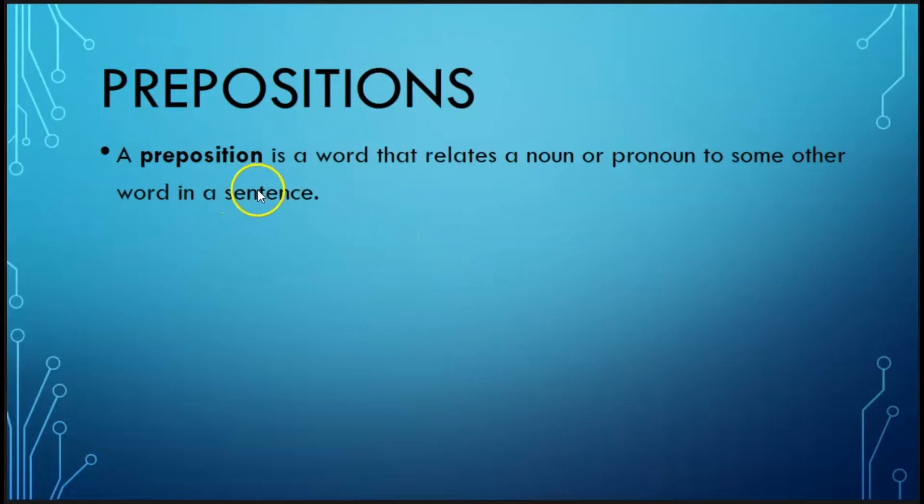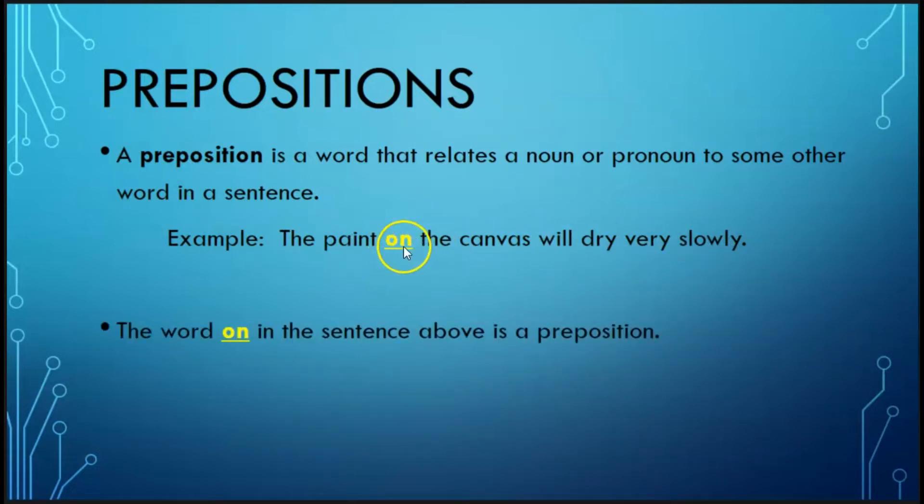For example, the paint on the canvas will dry very slowly. In this sentence, on is our preposition, and this is creating a relationship between paint and canvas.